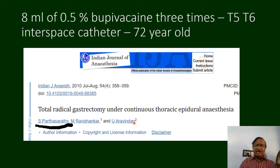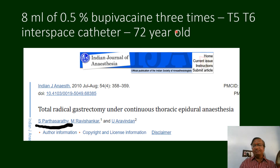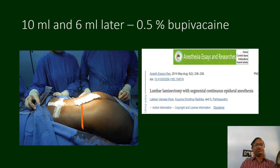For a total radical gastrectomy, I put an epidural catheter at T5-T6. The surgical incision runs from approximately T5 to T8 or T9. From T5 to T9, 8 ml of 0.5% bupivacaine was given two to three times and the surgery was completed with continuous thoracic epidural anesthesia.